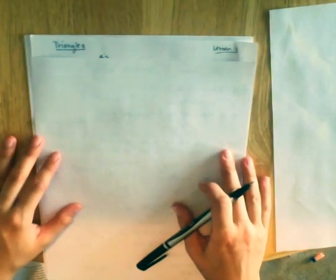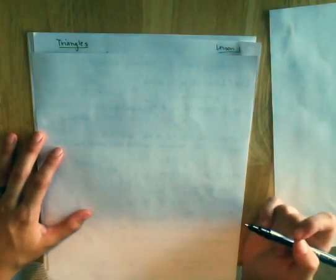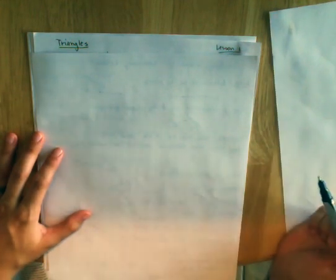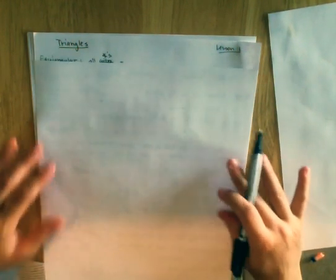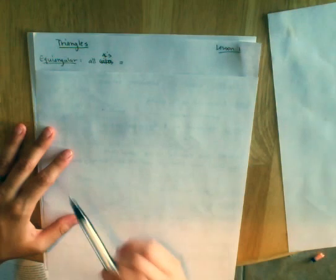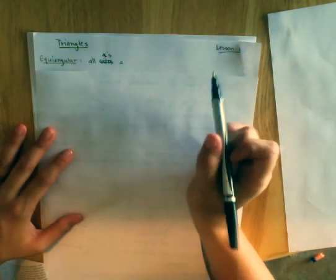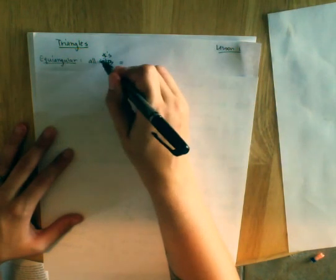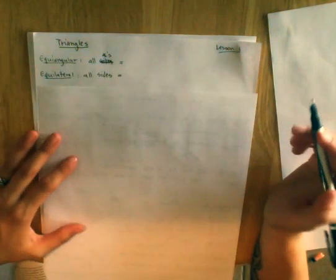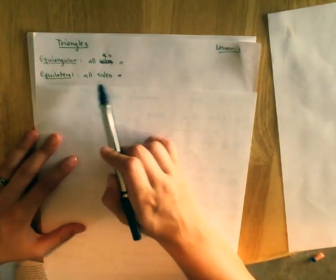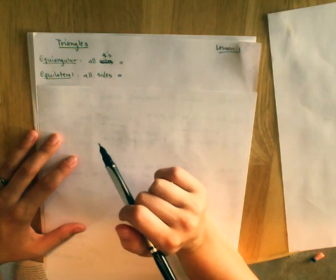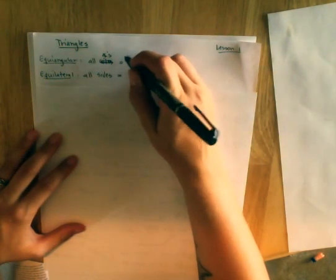Now, continuing on, our next segment is triangles. This is the very basic triangles. We are not yet in trig functions. Equiangular triangle, all angles are equal. Notice I had a small typo, it is angles. Equilateral, all sides equal. Again, I'm using notation here.